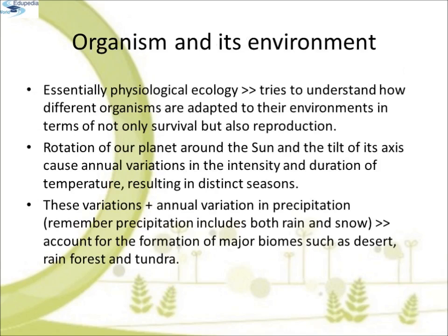Organism and its environment. Ecology at the organismic level is essentially physiological ecology which tries to understand how different organisms are adapted to the environment in terms of not only survival but also reproduction. You may have learnt how the rotation of a planet around the sun and the tilt of its axis cause annual variations in the intensity and duration of temperature resulting in distinct seasons. These variations together with annual variation in precipitation — which includes both rain and snow — account for the formation of major biomes such as desert, rainforest and tundra.